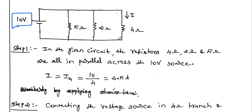The reciprocity theorem is applied for a single source circuit — that is, the circuit must consist of only one source. This circuit consists of only one source, and it is valid for a linear circuit and it is valid for a bilateral circuit. Here, the single source is the 10 volt battery.